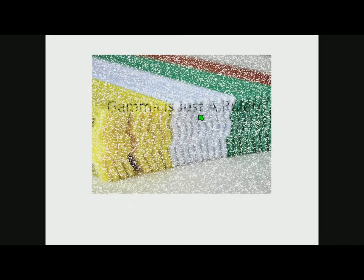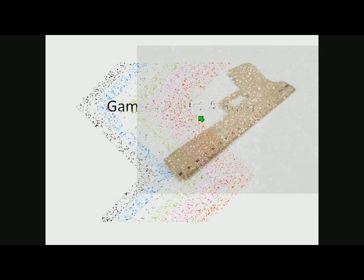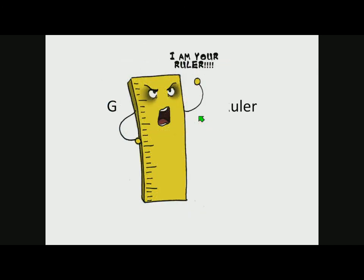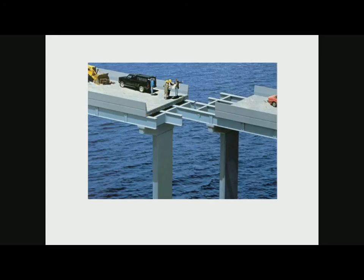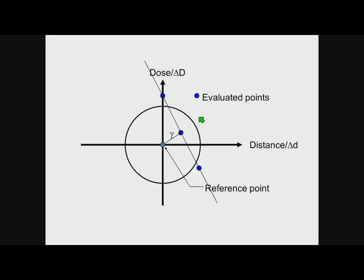Gamma has a lot of issues, but the fact is it's just a ruler — it can be used well or poorly. The question is: as a ruler, what are its properties, where can it go wrong, and what goes wrong in real clinical cases? Gamma is calculated for every point in the reference distribution. The reference can literally be a point — an ion chamber, TLD, three-dimensional, two-dimensional, or a single point — and the reference and evaluated distributions can be whatever they are.